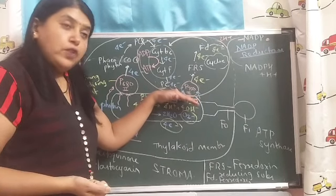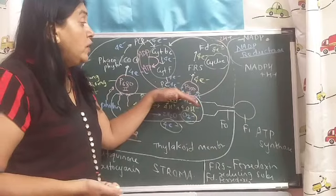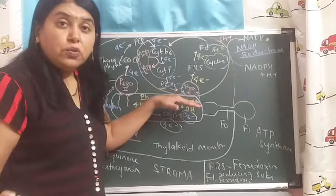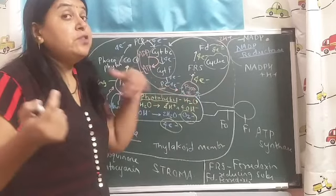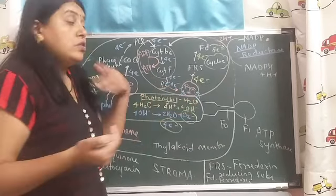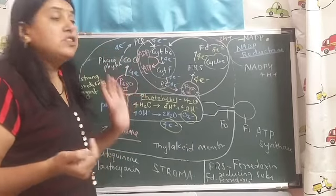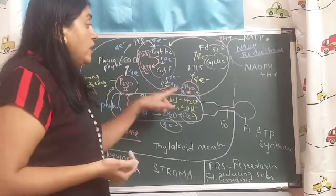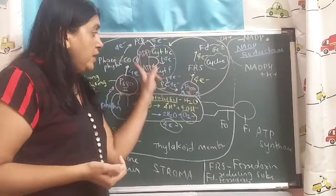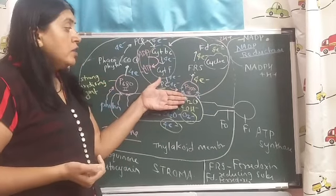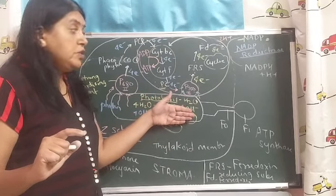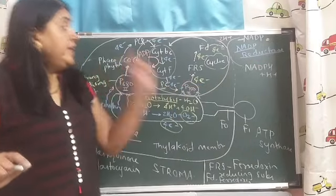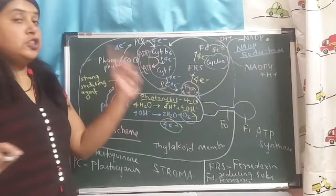In cyclic photophosphorylation: only PS1 is involved; there is no photolysis of water; there is no release of oxygen; there is no formation of NADPH. Only there is formation of ATP.